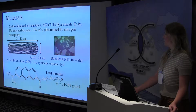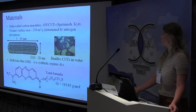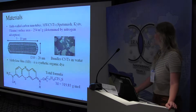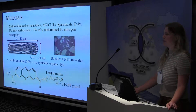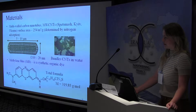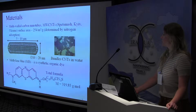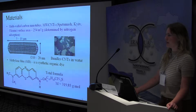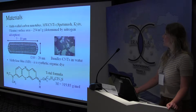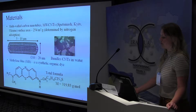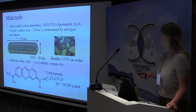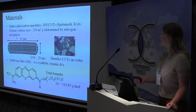Our multi-walled carbon nanotubes were obtained from Spetsmarsh, Kyiv, Ukraine. Their surface area was 250 square meters per gram, determined by nitrogen adsorption. These carbon nanotubes were prepared from ethylene by chemical vapor deposition with iron, aluminium, and molybdenum catalysts. The typical inner diameter was 10–20 nanometers, while the length was 5–10 micrometers.